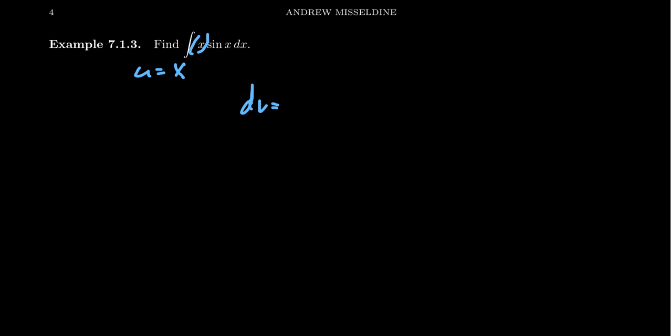What about sine? If you take the derivative of sine, you get cosine. If you take the anti-derivative of sine, you get negative cosine. So you're going to get a plus or minus cosine no matter what you choose. In some respect, it doesn't matter where the sine goes. But it does matter where you put the x — we can simplify by taking the derivative of x. So we set u equal to x, hence du equals dx. And we set dv to be sine of x dx — don't forget the dx — so v equals negative cosine of x.